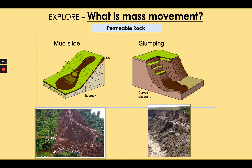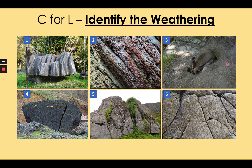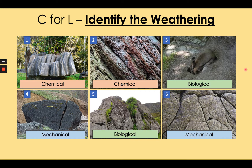Time to assess learning. I'm going to show you six pictures — you need to identify the type of weathering. Write one to six and then write the type of weathering: chemical, biological, or mechanical. Mark your answers. If you've got five or more, excellent — you've really understood this.